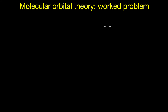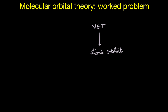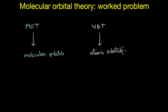We have already seen the various theories and models that help us understand how bonding takes place in molecules. The last one we saw was VB theory, which focuses on how atomic orbitals combine to give chemical bonds when a molecule is formed. On the other hand, molecular orbital theory explains bonding in terms of molecular orbitals, which are formed by the combination of atomic orbitals.